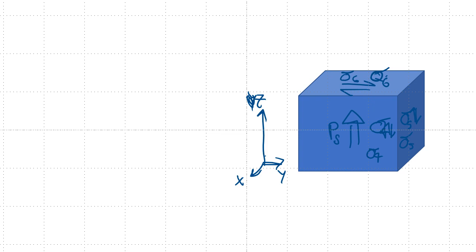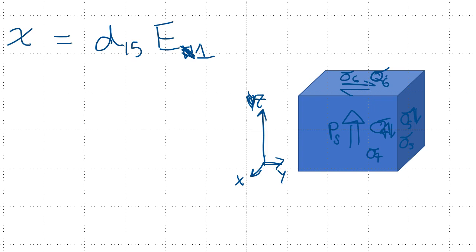There are coefficients for example d15. If I apply an electric field in the d15 direction — this is going to be an electric field applied in the 1-direction — we will get a strain in the 5-direction. So the input is electric field in the one-direction, and we get a final product of strain in the five-direction.